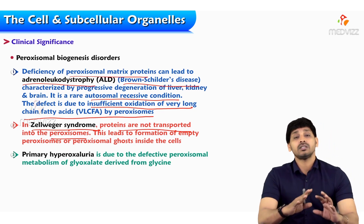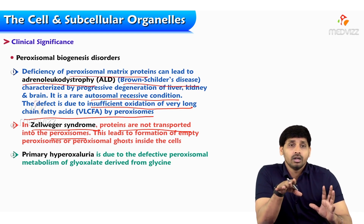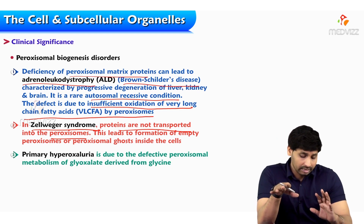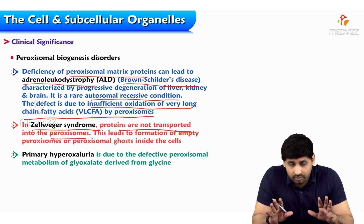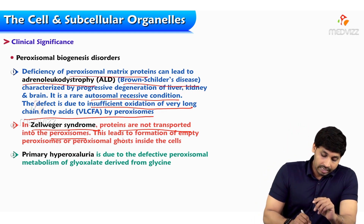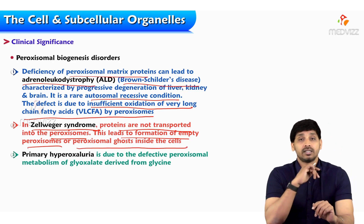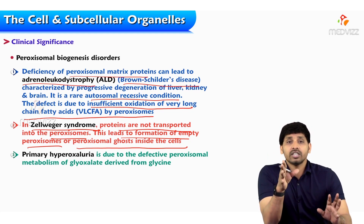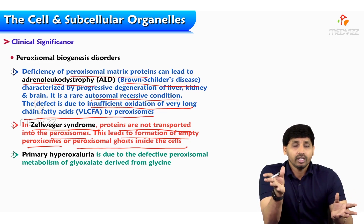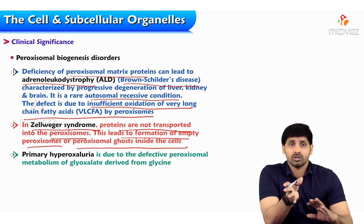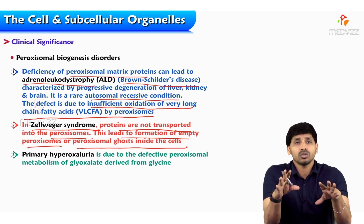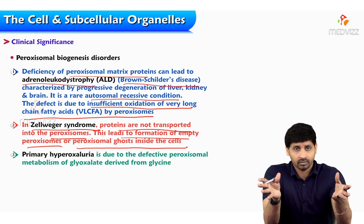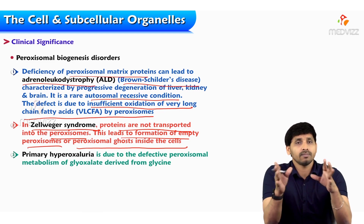Another peroxisomal disorder is Zellweger syndrome. In this condition, proteins are not transported into peroxisomes — the peroxisomal membrane is not permitting outside proteins to enter inside, meaning there is a deficiency in the transporter. This leads to the formation of empty peroxisomes, called peroxisomal ghost cells. Normally peroxisomes should be filled with proteins and long chain fatty acids, but in Zellweger syndrome the membrane does not allow any proteins or substances to enter inside.